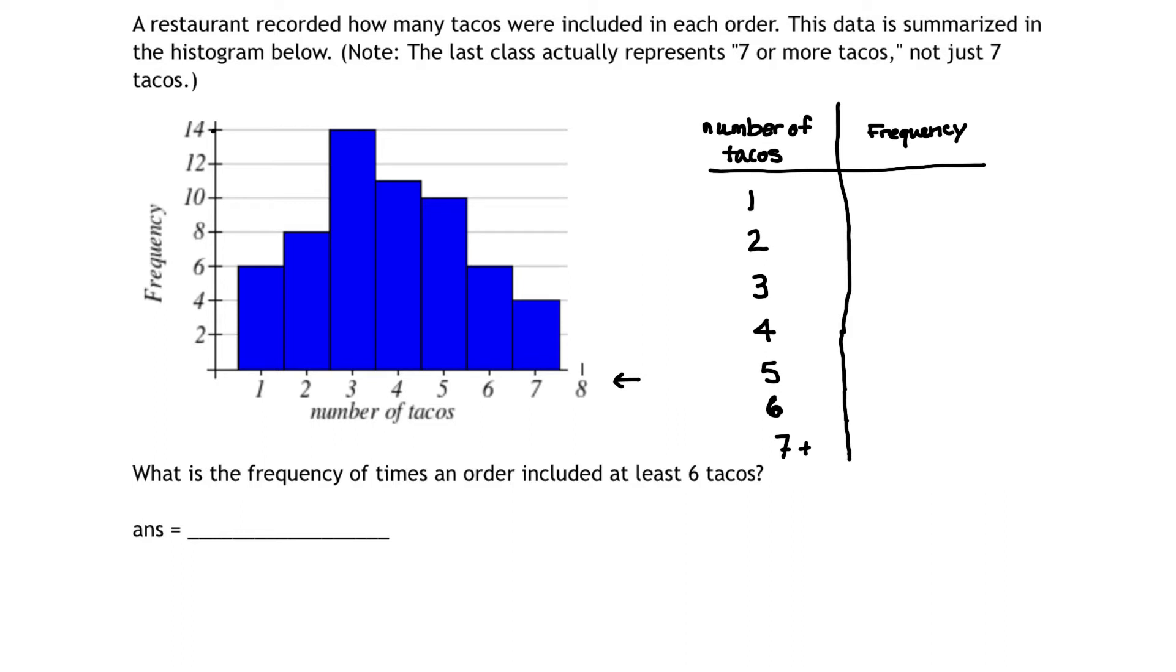Now, the frequency comes from the vertical axis. To determine the frequency of the number of tacos one, when we have one taco per order, how often does that occur? We simply look at where the bar graph meets the frequency on the y-axis, and that's six. So the number of tacos one is assigned to a frequency of six.